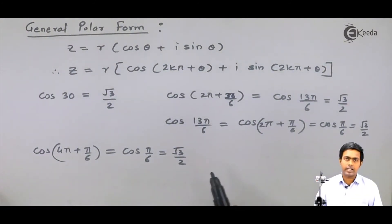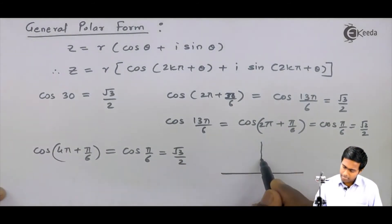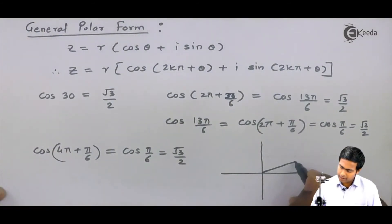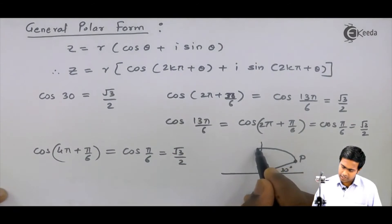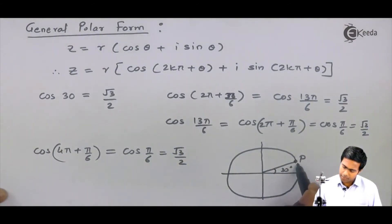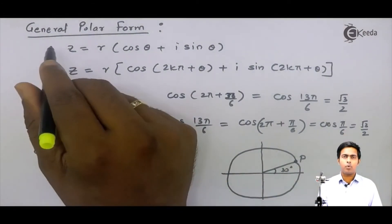We can also understand this concept from the diagram. Let's consider this: let's say the angle is 30°, it means the point can be at this place. So this is angle 30°. When I am adding 2π in it, 2π is nothing but 360°, so after moving 360°, I am again reaching at the same point. When I add 4π, I again move 360° more, or I will say I move 720°. So after moving 720°, I again reach at the same point.